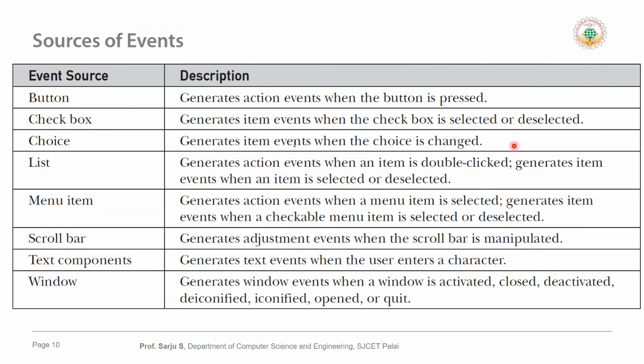These are the different sources of events. Events may be generated from a Button when clicked, a Checkbox when selected or deselected, a Choice when changed, a List when items are double-clicked, a MenuItem when selected from a drop-down menu, a Scrollbar when adjusted, a TextField or TextArea when text is typed, and a Window when it is closed, opened, activated, or deactivated. These are the sources of events. Thank you.